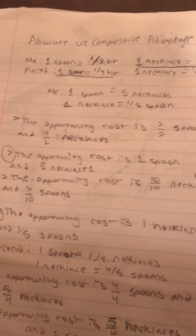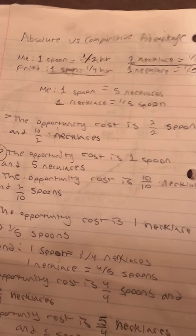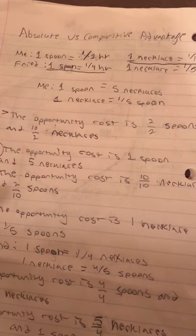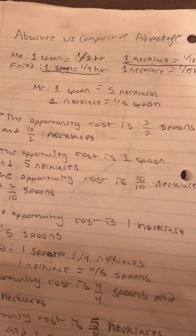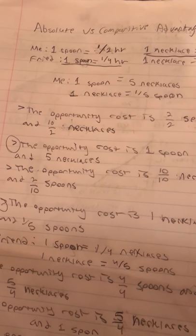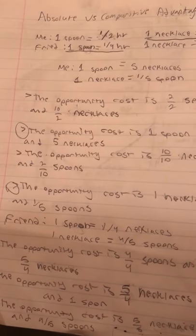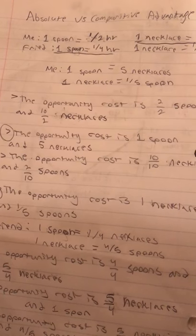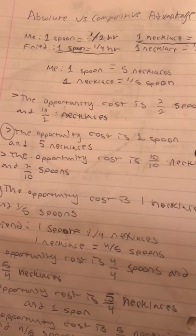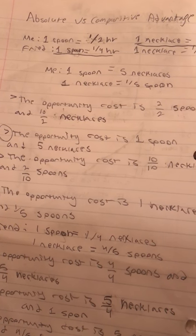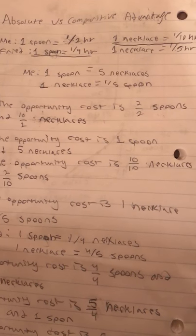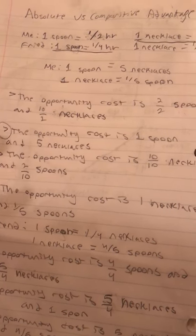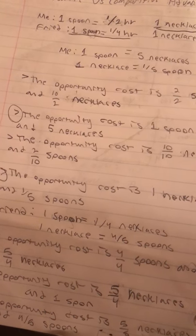So for me, one spoon every five necklaces, or you could see it as one necklace for every one-fifth of a spoon. So here are all the opportunity costs listed. So I'm just going to go through each one. So the opportunity costs, these are all for me first. The opportunity costs for me to make one spoon, two out of two spoons is about five necklaces.